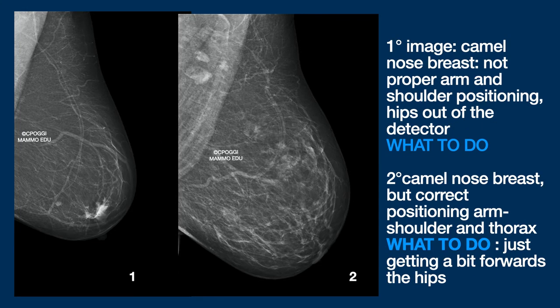Two examples of camel nose mammography. In image two, pectoralis major is correct — just realign the hips with the thorax to regain the lost inferior tissue. In the first image, positioning of arm and shoulder should be corrected.